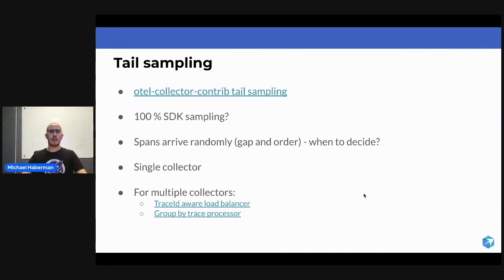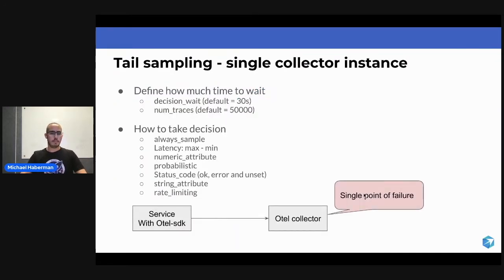The way that it looks is we have the SDK sending data to the OpenTelemetry collector. The first thing that we need to say to the tail sampling processor is how much time you're going to wait before you take a decision.